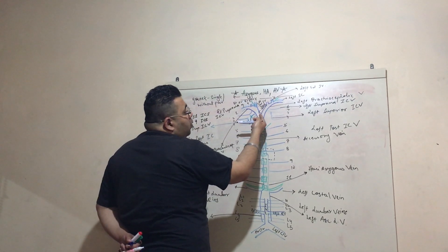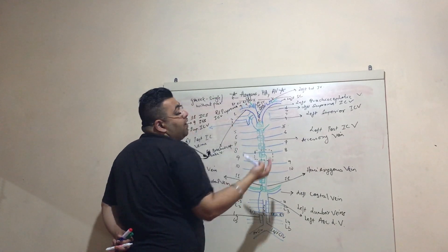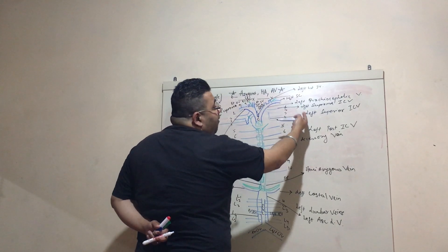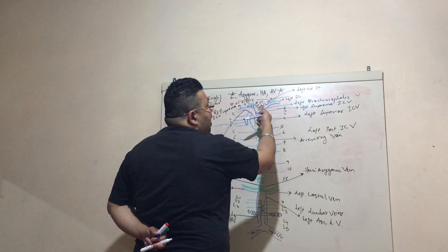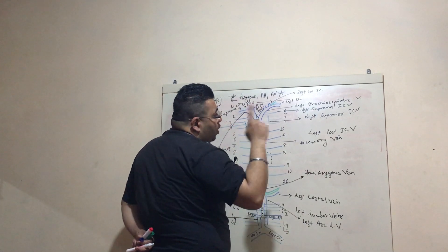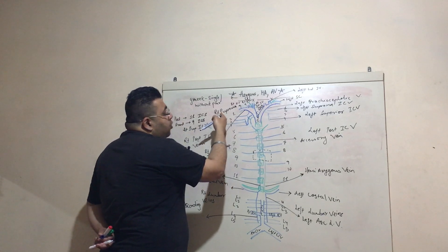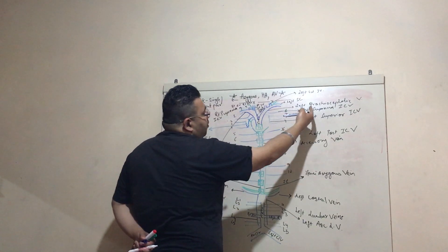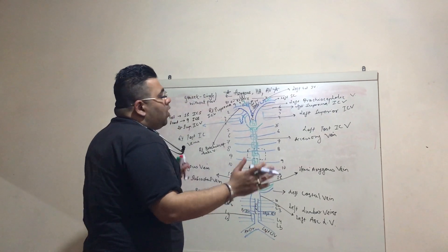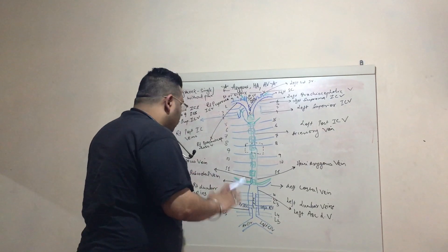An important difference: on the right side, the right superior intercostal vein drains into the superior vena cava, but on the left side, the left superior intercostal vein drains into the left brachiocephalic vein. Both the right and left suprema intercostal veins drain directly into the brachiocephalic vein on their respective sides.